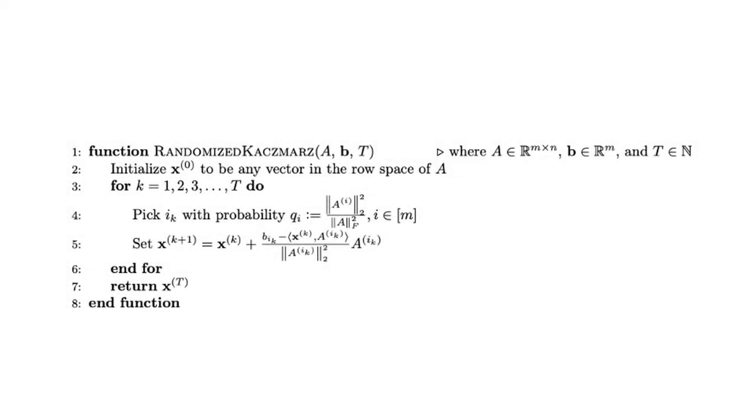This is one version of the Kaczmarz algorithm, called randomized Kaczmarz. It randomly selects a row, updates the ranking vector using the method we just illustrated, and repeats that process for any given amount of iterations. That is how the Kaczmarz method uses an iterative approach to solve systems of equations.